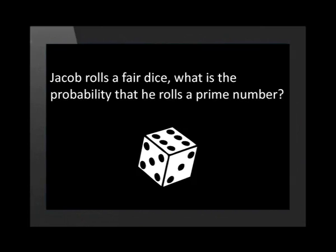The best way to get to know probability calculations is to do a couple of examples. Let's try one together. Jacob rolls a fair dice. What is the probability that he rolls a prime number? Remember that a prime number only has the factors of 1 and itself. We'll start with a list of the prime numbers that appear on a dice.